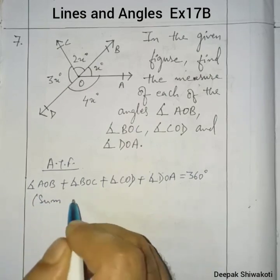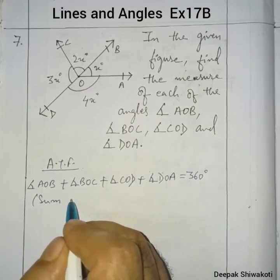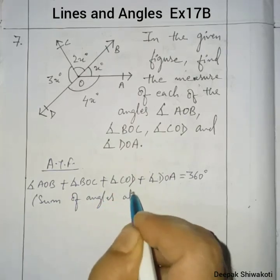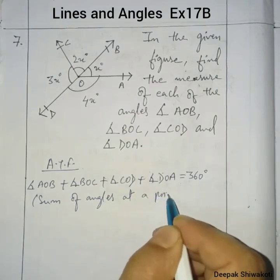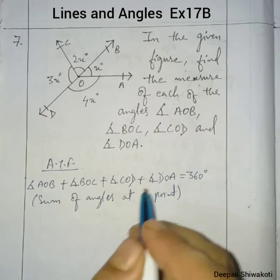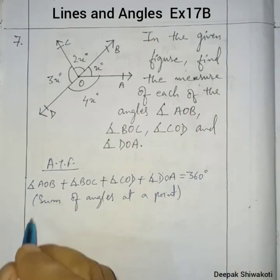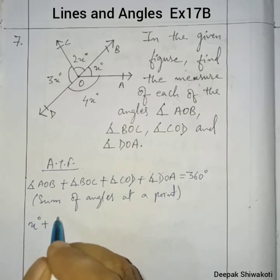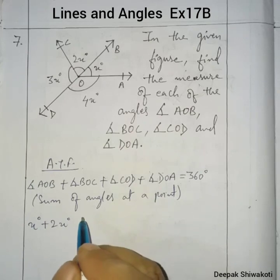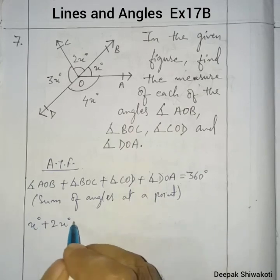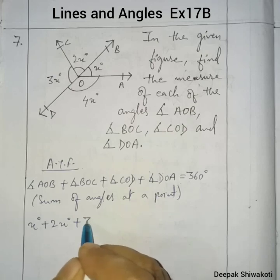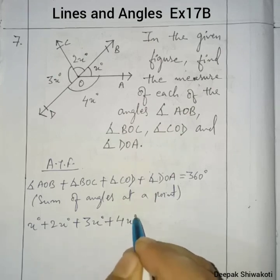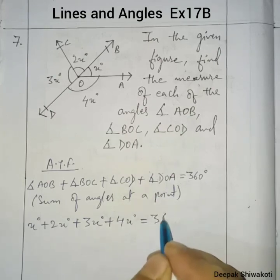These angles are all at a point, so the sum of angles at a point equals 360 degrees. According to the figure, angle AOB is x degrees, BOC is 2x degrees, COD is 3x degrees, and DOA is 4x degrees. Their sum equals 360 degrees.